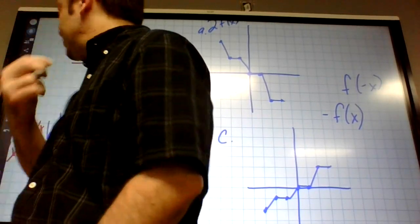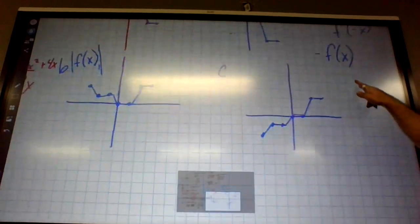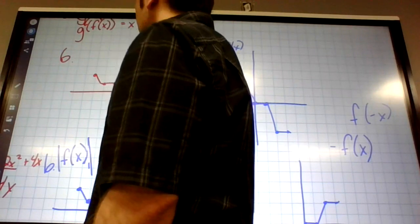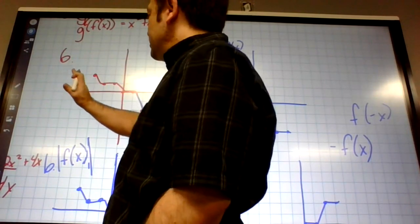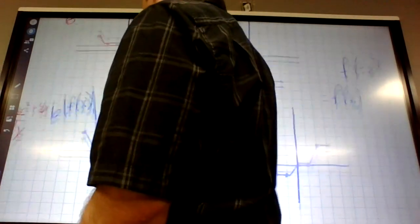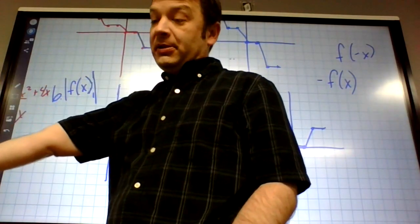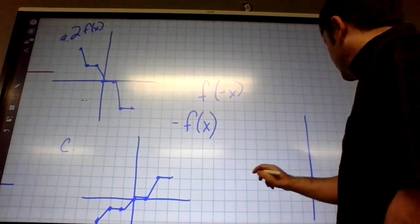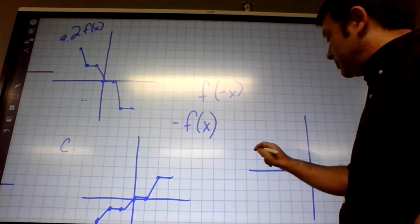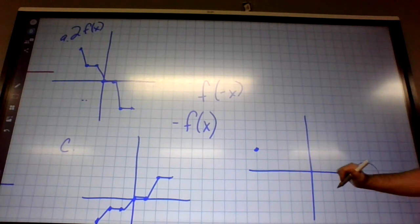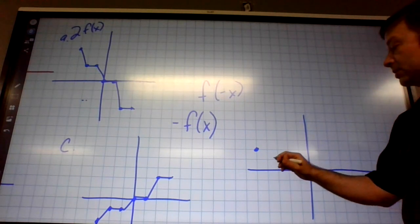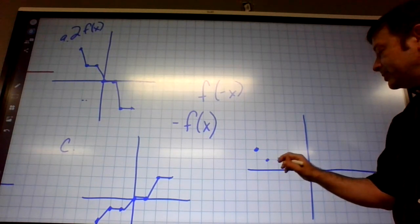What's a plus 2 on the x going to do? When it's directly on the x, it does the opposite — it moves it left 2. If it were outside the function it would move it up 2, but when it's directly on the x it affects the x direction. So everything moves left 2: where it was at negative 3 comma 2, it's going to be at negative 5 comma 2.